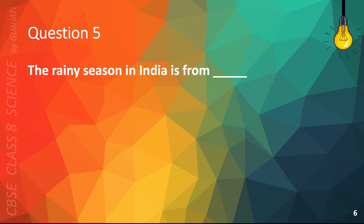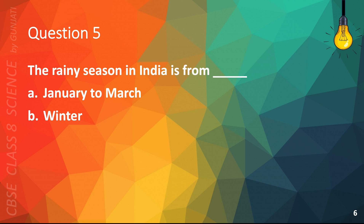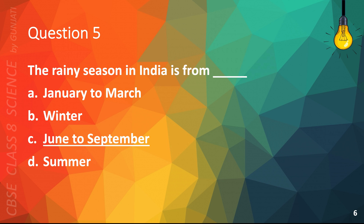Question 5. The rainy season in India is from blank to blank. A. January to March, B. Winter, C. June to September, or D. Summer. The correct answer is C. June to September.